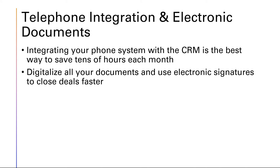The next thing you want to do is telephone integration and electronic documents. Integrating your phone system with CRM is the best way to save tens of hours each month — all calls that go through get documented automatically. Also, digitalize all your documents and use electronic signatures to close deals faster. Create contract templates in the CRM and use them for e-signatures rather than the traditional paper route.